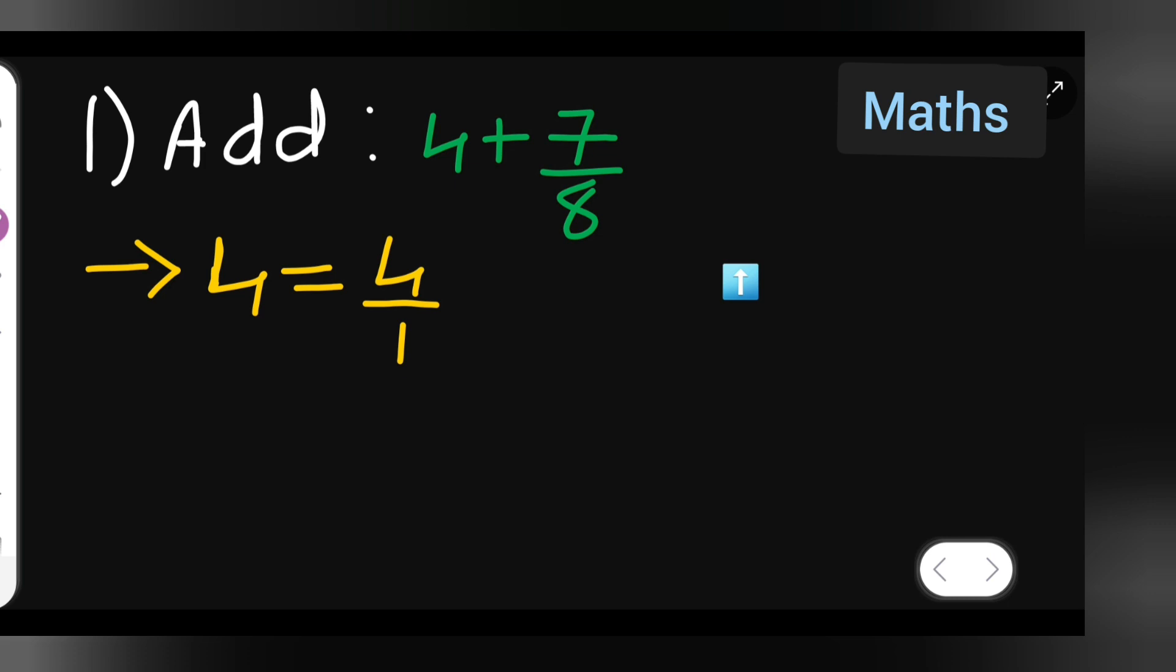Now what I'll have to do is multiply this by 8. Both numerator and denominator you have to multiply it by 8. So 4 times 8 you are going to get 32, write down 32 upon 8.